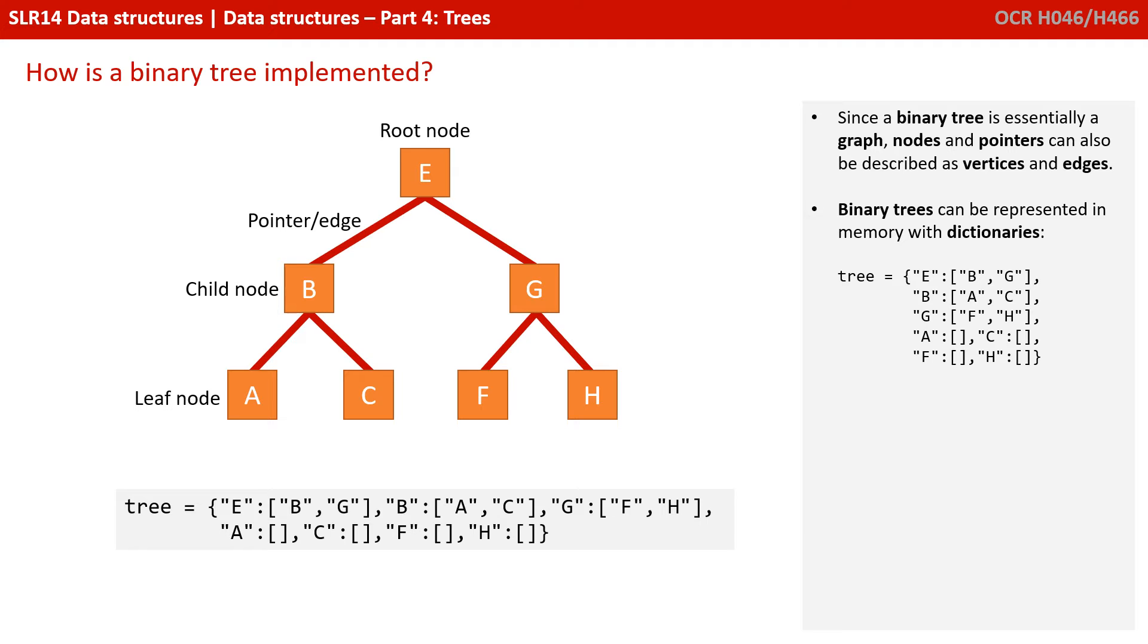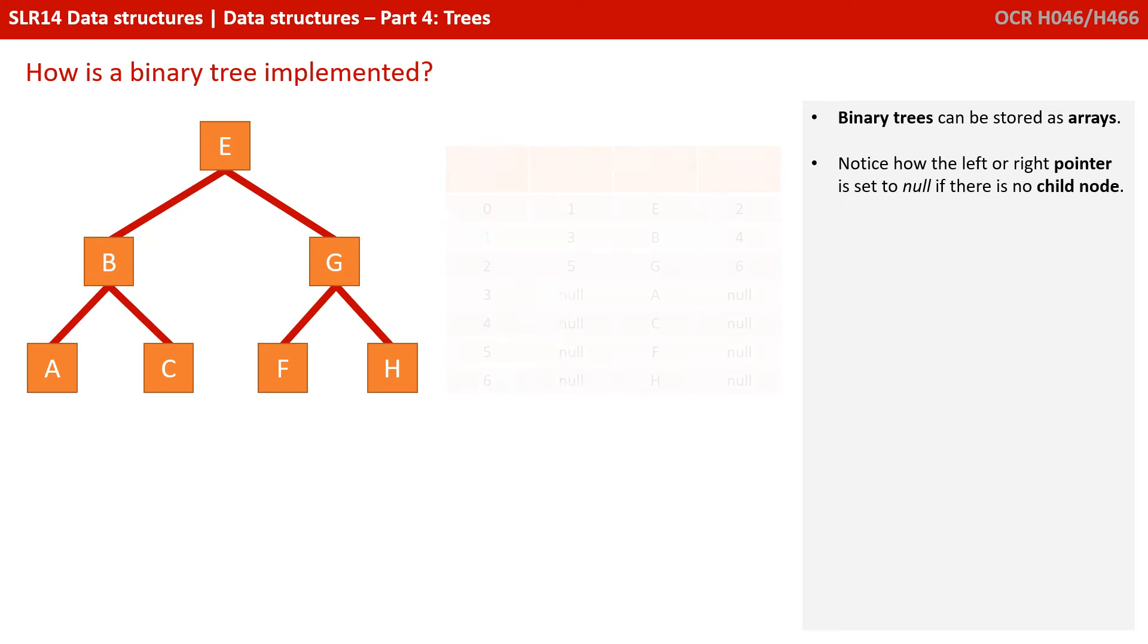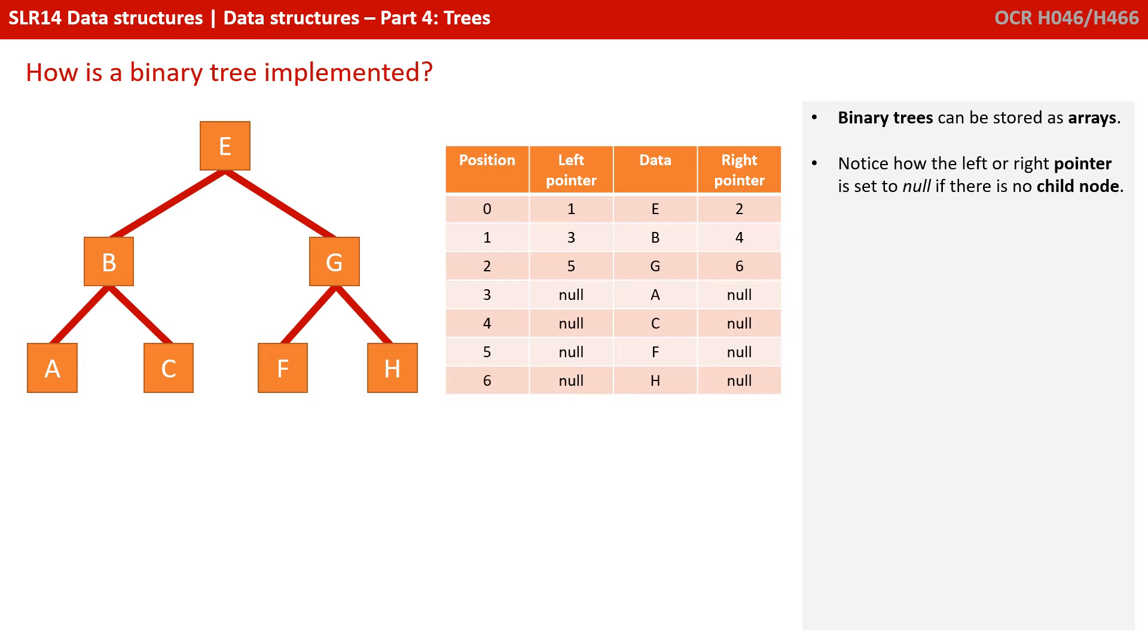Binary trees can be represented in memory with dictionaries, as shown here in Python. Binary trees could be stored in static arrays. Notice how the left or right pointer in the various rows of this table are set to null if there's no child node.